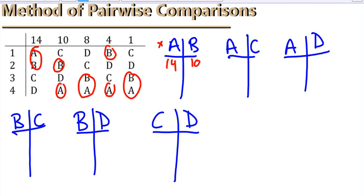So, we have 14 votes go to A from column 1, 10 votes go to B from column 2, 8 more votes go to B from column 3, plus 4 more, plus 1 more. We see that B is the winner, and we circle them. We see that that means B gets one point.